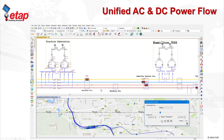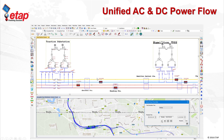Once the calculation is completed, the movement of the train is shown directly on the geospatial as well as the railway schematic diagram. Various information, such as the movement of the train and the power flow solutions, including voltage drops, are shown directly on the GIS as well as the one-line diagram.